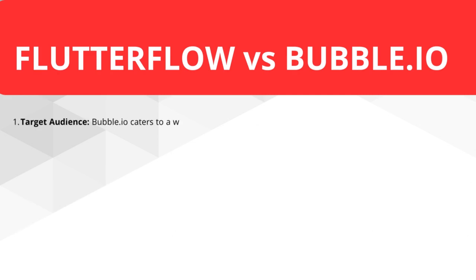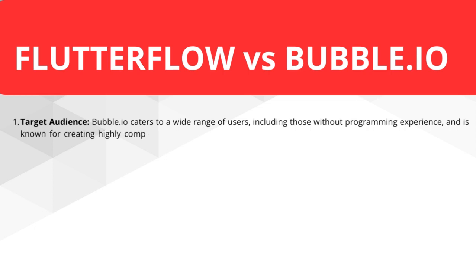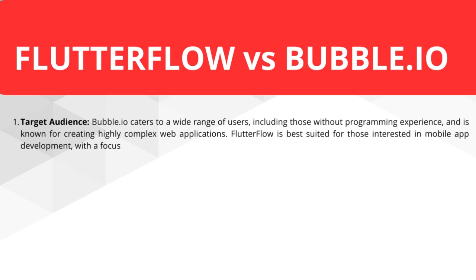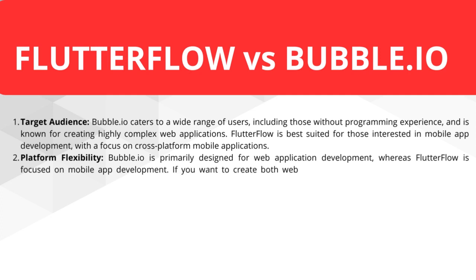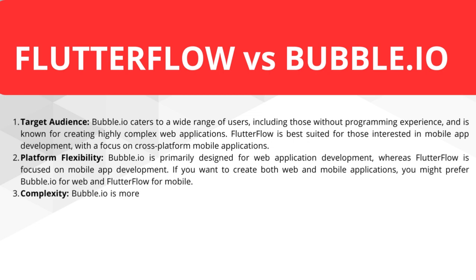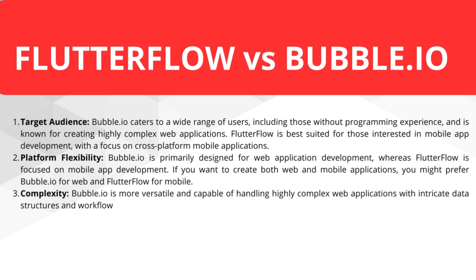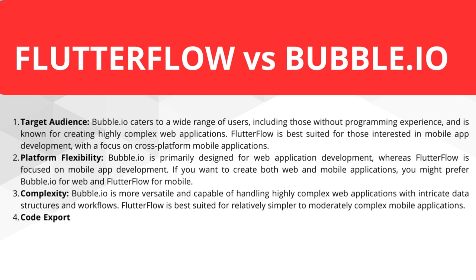Now a comparison so you can choose the best for your needs. Target audience: Bubble.io caters to a wide range of users, including those without programming experience, and is known for creating highly complex web applications. Flutter Flow is best suited for those interested in mobile app development with a focus on cross-platform mobile applications. Platform flexibility: Bubble is primarily designed for web application development, whereas Flutter Flow is focused on mobile. If you want both, you might prefer Bubble for web and Flutter Flow for mobile. Complexity: Bubble is more versatile and capable of handling highly complex web applications with intricate data structures and workflows, while Flutter Flow is best suited for simpler to moderately complex mobile applications.